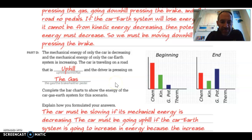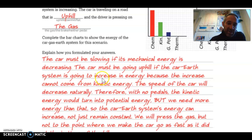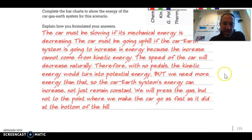And then in Part D, we have the mechanical energy of only the car is decreasing, and the mechanical energy of only the car Earth system is increasing. So the car is traveling on a road that is uphill, and the driver is pressing on the gas pump. So you can see that the chemical energy is going down. He's pressing on the gas pedal. Kinetic energy looks like it's going up, and we start it off high and we're going lower. The potential, on the other hand, is going up. We're not pushing on the brake, so the thermal energy is nothing. Here's that paragraph that explains that.